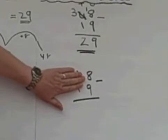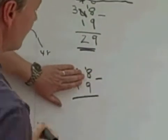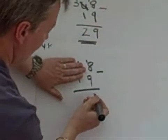So I'm going to make it 18. So 18 take away 9 is 9.